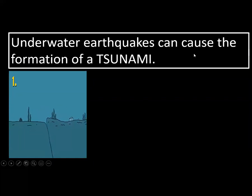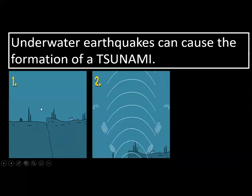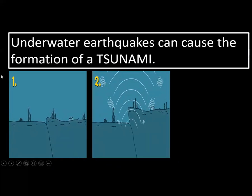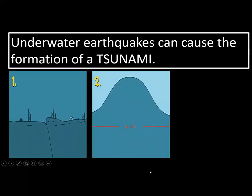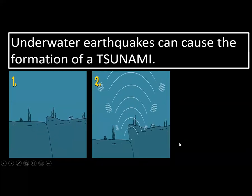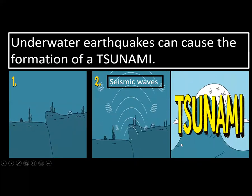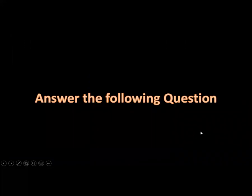How do tsunamis happen? Underwater earthquakes can cause the formation of tsunamis. The movement from an earthquake causes seismic waves that result in the sea level rising up and forming a giant wave called a tsunami. Hopefully this video provided you with the knowledge to get a good score on our assessment. Thank you so much, and see you guys.